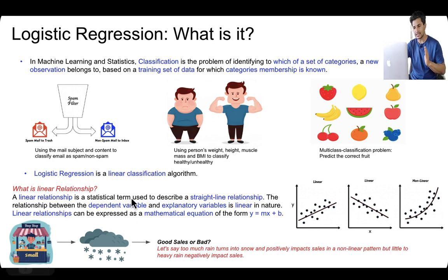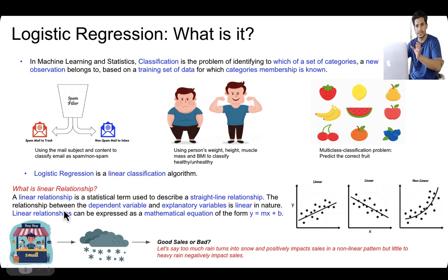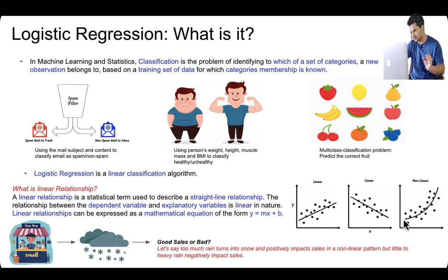One thing to note: logistic regression is a linear classification algorithm. A linear relationship in statistical terms describes a straight line relationship — something like y = mx + b — where the relationship between the dependent variable (the target variable) and the explanatory variables (features) is linear in nature. The first two charts show a linear relationship, while the third shows a nonlinear relationship.